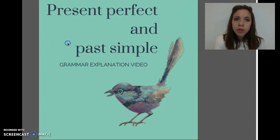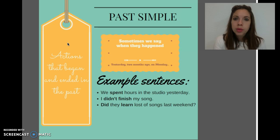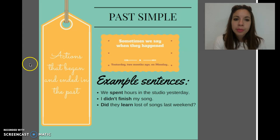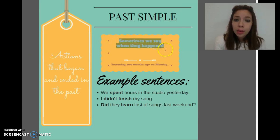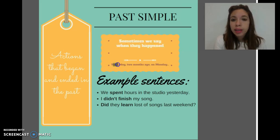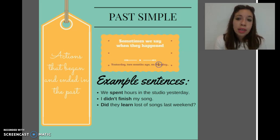First, we're going to start with the past simple. As you can see here in the presentation, the past simple is used for actions that began and ended in the past. Sometimes we can say when those actions happened, using words like yesterday, two months ago, on Monday, last weekend.